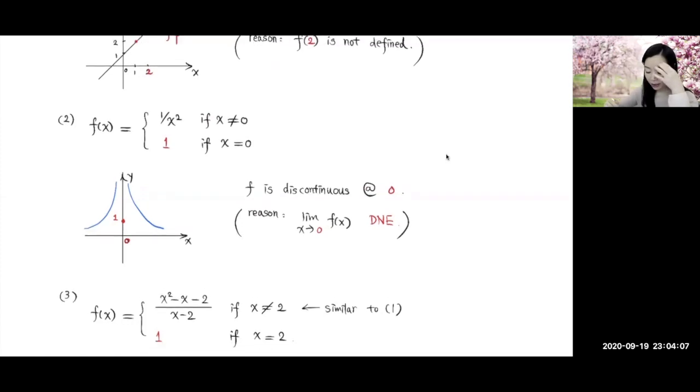Remember the second requirement for a function to be continuous, that the limit at a has to exist. So over here, the limit at 0 does not exist. So the function is discontinuous at 0.